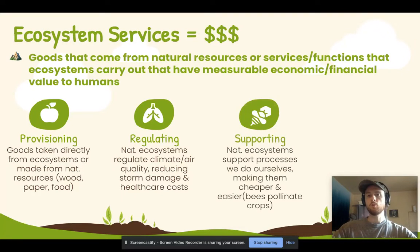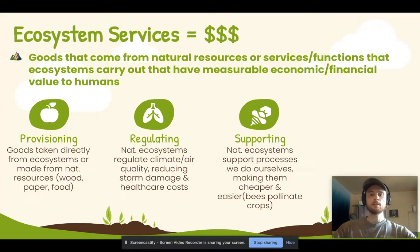Then we have supporting services. These are processes done by natural ecosystems that enable us to do processes that we already do more efficiently and at a lower cost. So these are things such as pollinators that support our agriculture.